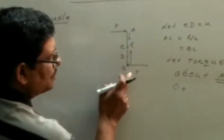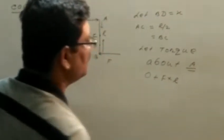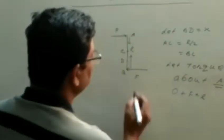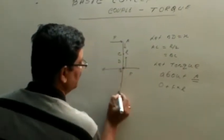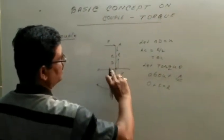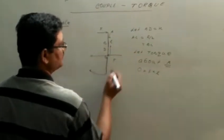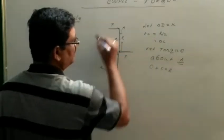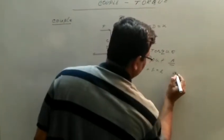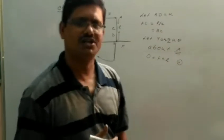The torque about point A due to this force is F into L. Torque is a vector quantity, so we consider the direction. The position vector R is from A to the point of application. This torque acts in the inward normal direction.